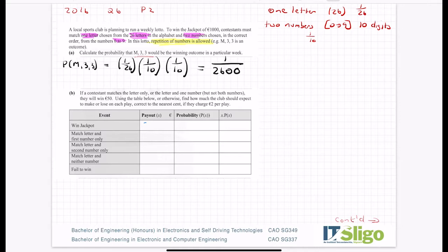Part B: if a contestant matches the letter only or the letter and one number but not both numbers they will win 50 euros. Using the table below or otherwise find how much the club should expect to make or lose on each play corrected to the nearest cent if they charge 2 euros per play. So let's read down here: win the jackpot, match the letter and the first number only they're going to win 50 euros. Match the letter and the second number 50 euros. Match the letter only, match the letter and neither number. Failed to win, they're going to win zero. Win the jackpot, the jackpot was 1000.